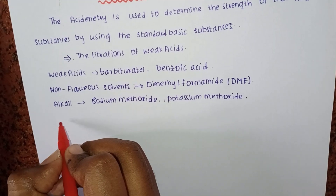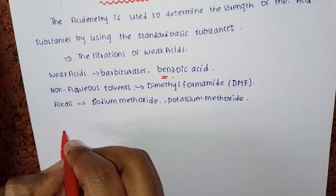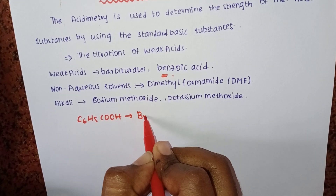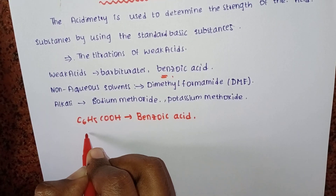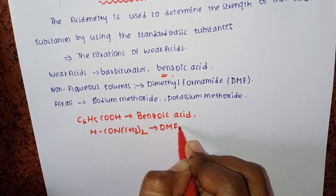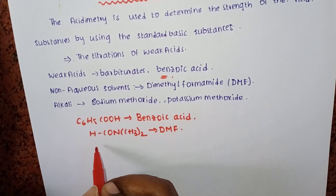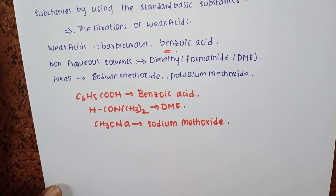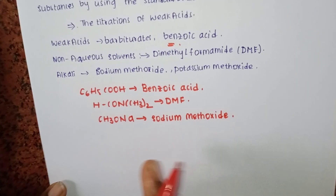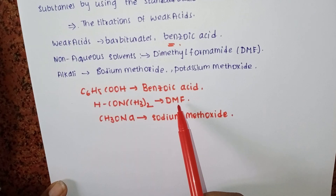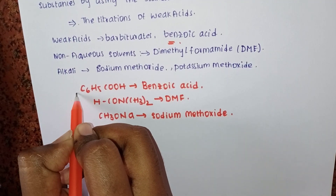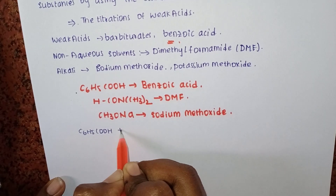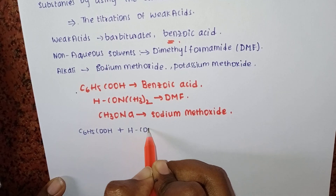First, we will titrate benzoic acid. The formula for benzoic acid is C6H5COOH. The non-aqueous solvent used is dimethylformamide, and the alkali used is sodium methoxide. The weak acid C6H5COOH is dissolved in the non-aqueous solvent dimethylformamide.